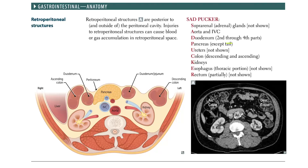Let's talk about GI anatomy, specifically the retroperitoneal structures. The mnemonic is 'SAD PUCKERS.' When thinking about this, start with the vessels: the aorta and IVC.